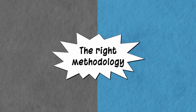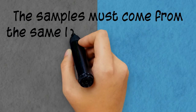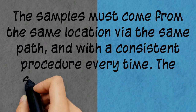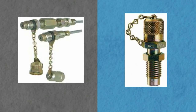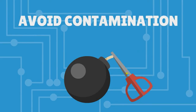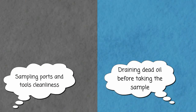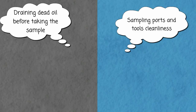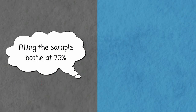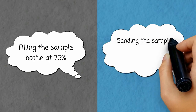For the right methodology: samples must come from the same location, via the same path, and with a consistent, perfectly repeatable procedure every time. The best way to achieve this is with dedicated sampling ports. If not possible, the process should be documented in the lowest level of detail to allow reproduction. It is also critical to ensure no sample contamination, achieved by: 1) ensuring sampling ports and tools cleanliness, 2) draining dead oil before taking the sample, 3) filling the sample bottle to 75%, and 4) sending the sample to the lab within the same day.